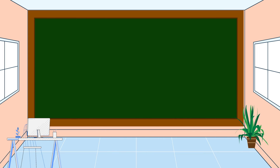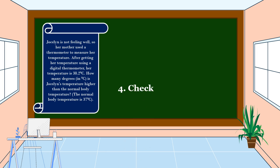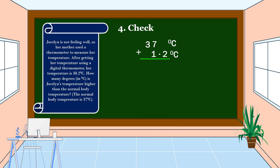We already solved the problem. The last step is to check. Let's add 37 degrees Celsius plus 1.2 degrees Celsius. Bring down 0.2, 7 plus 1 is equal to 8, bring down 3. Therefore, our answer is correct.